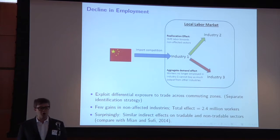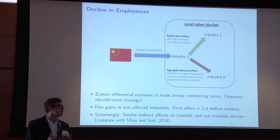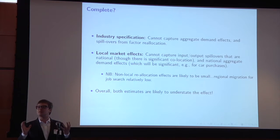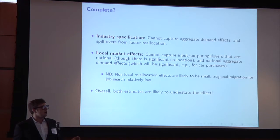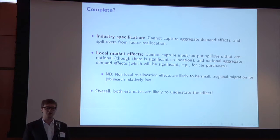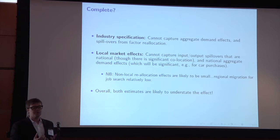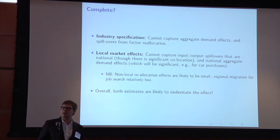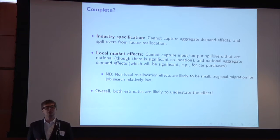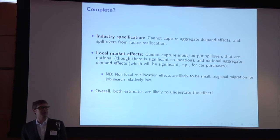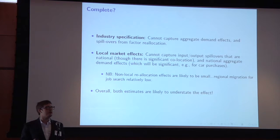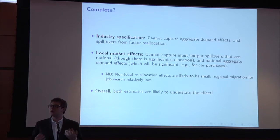The authors don't find a differential effect for tradable versus non-tradable sectors, which is somewhat in contrast with work Atif Mian has done with others. I think spending a bit more time trying to reconcile why you don't find that differential effect would be a worthwhile direction. Overall, I actually think a lot of these channels are understating the full effect of what's going on with import penetration from China, since the local commuting zone estimates are also missing the impact on tradable industry employment in other parts of the US.